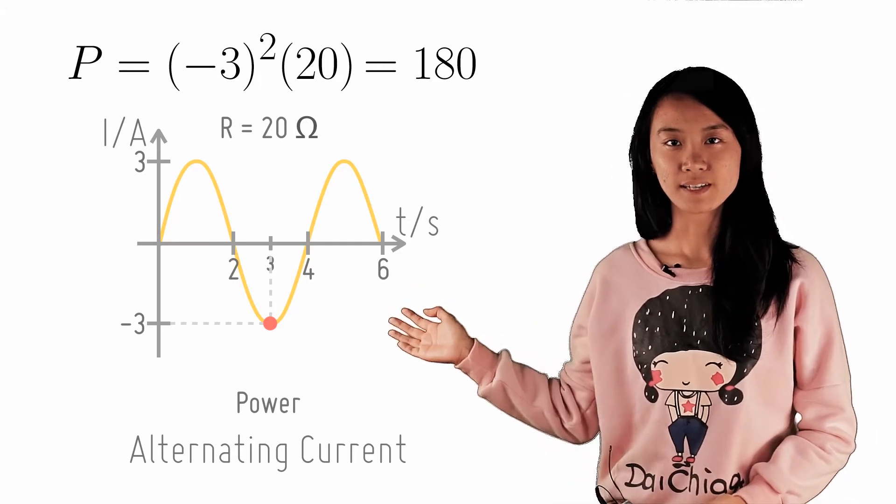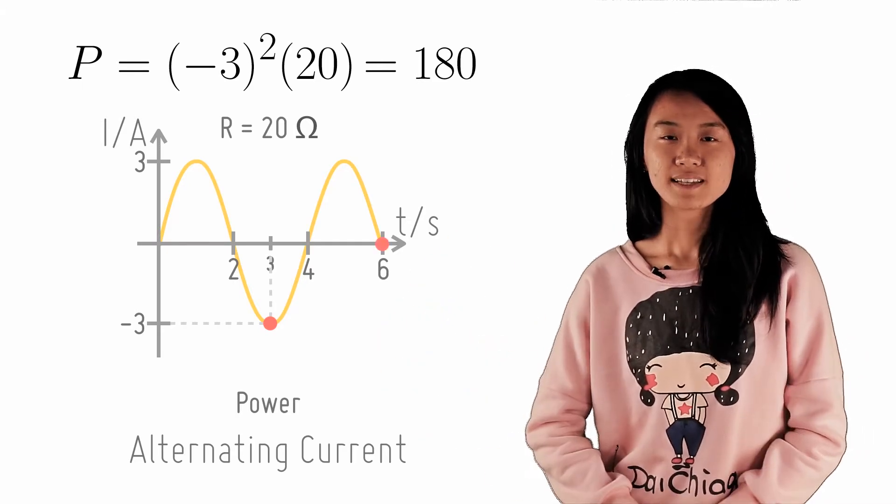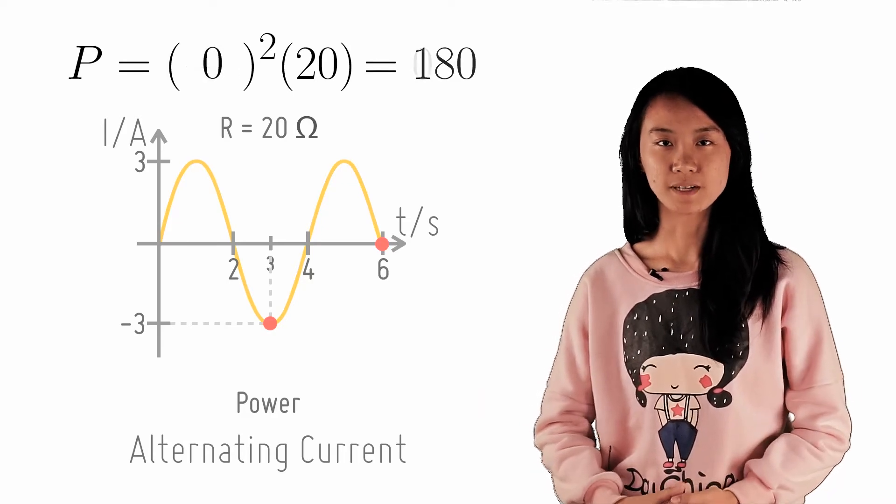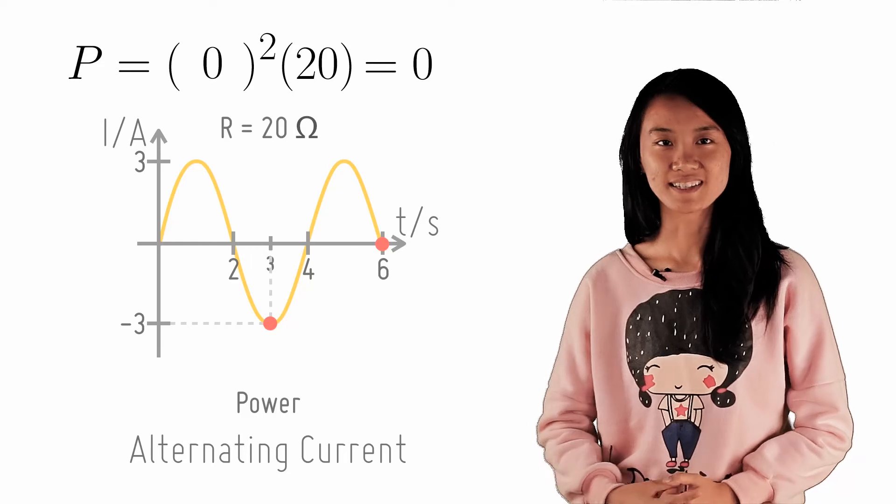What about the power output here at T equals 6 seconds? The current at this time is zero ampere, hence the power output is zero watts. It has no power output at T equals 6.